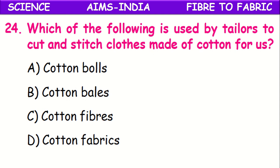Which of the following is used by tailors to cut and stitch cloths made of cotton? First cotton fiber is converted into cotton yarn, cotton yarn is converted into fabric, and it is delivered. Tailors use cotton fabrics, cut them, and stitch them into different cloth shapes.